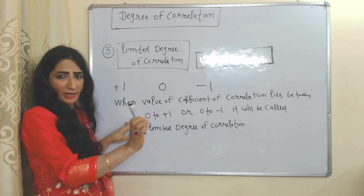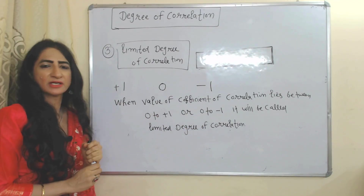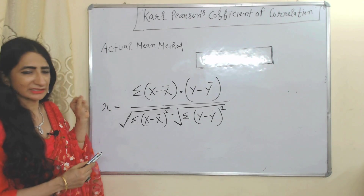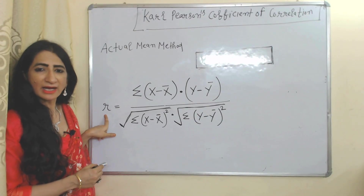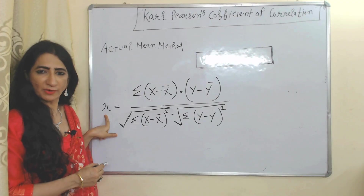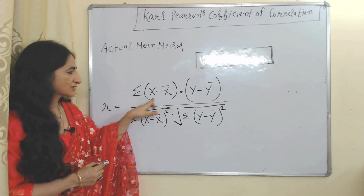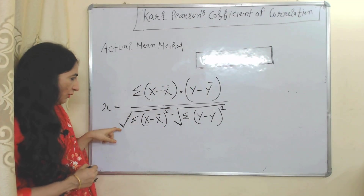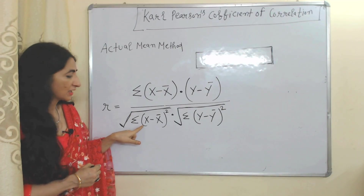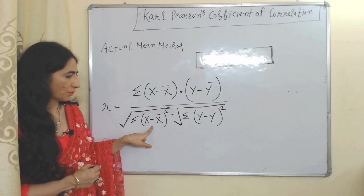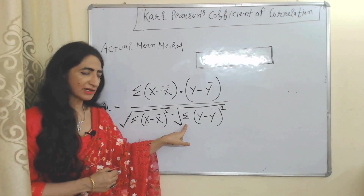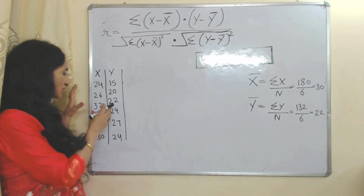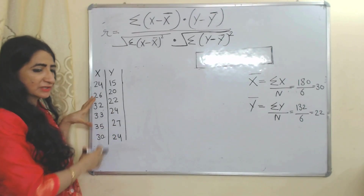Limited degree of correlation means when the value of the coefficient of correlation lies between zero and +1 or zero and -1, it will be called limited degree of correlation. Now we will see Karl Pearson coefficient of correlation with the actual mean method. The formula is: r equals summation of (x minus x̄)(y minus ȳ) over the square root of summation of (x minus x̄)² multiplied by the square root of summation of (y minus ȳ)².